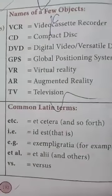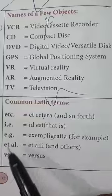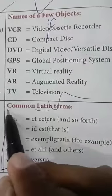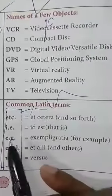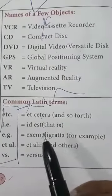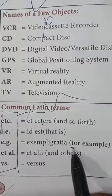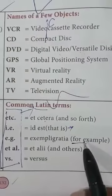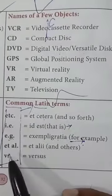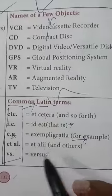ETC means 'et cetera' and so on. We also have some Latin terms: IE stands for 'id est', that is 'that is'. For example, EG stands for 'exempli gratia', which also means 'for example'. Note: IE is used for general explanation while EG is used for specific individual examples. Et al. means 'et alii', meaning 'and others'.